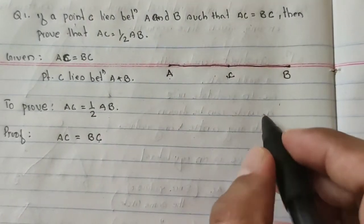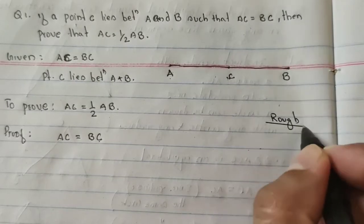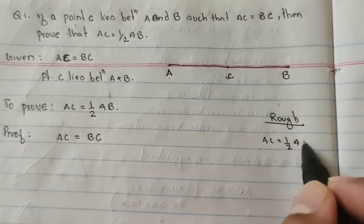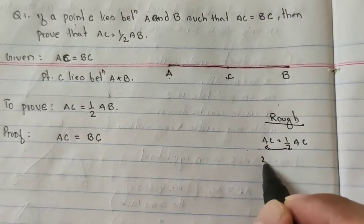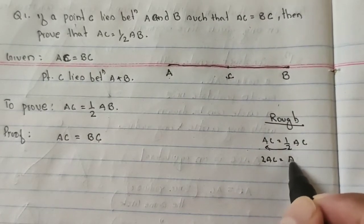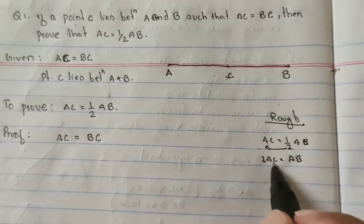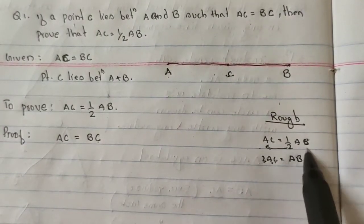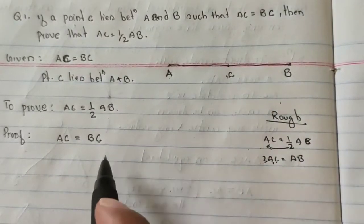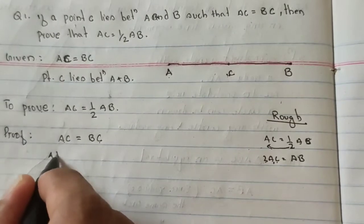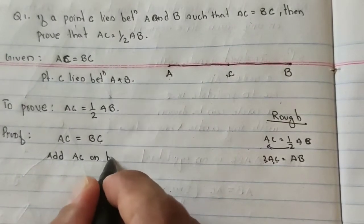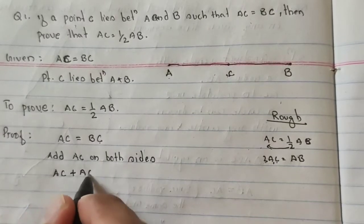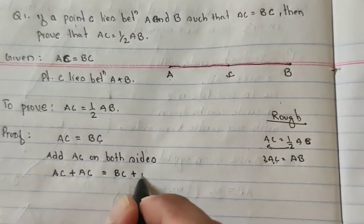You can do the rough work on the side. Suppose this is my rough — you can write in your notebook on the right side. Here, AC is given as half of AB. Now you take these two. So here I will get 2AC is equal to AB. Now I have one AC but I need two AC, and on this side I need AB but I have only BC. So what I will do — I will add AC on both sides.